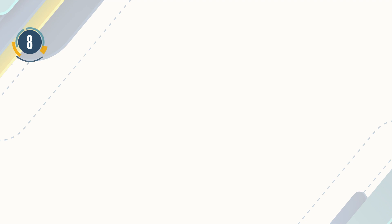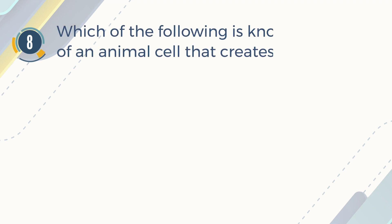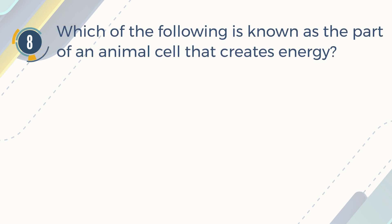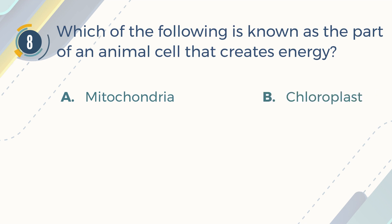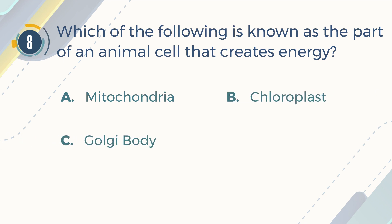Number 8. Which of the following is known as the part of an animal cell that creates energy? A. Mitochondria. B. Chloroplast. C. Golgi body. D. Nucleus.